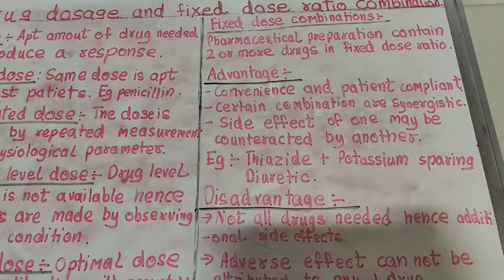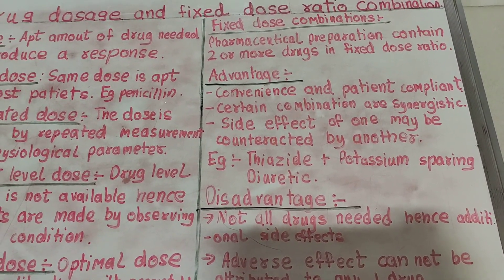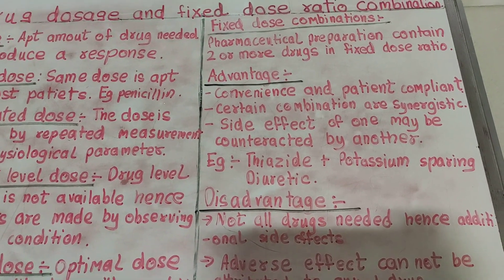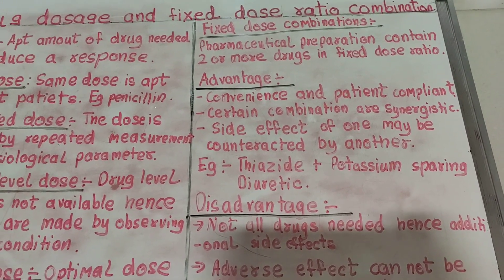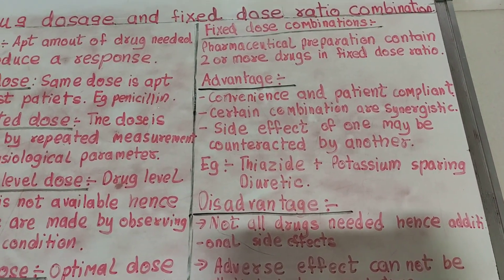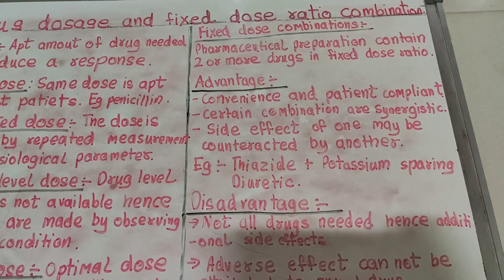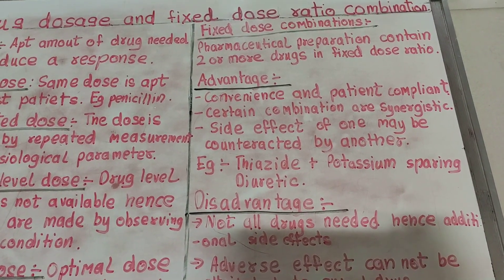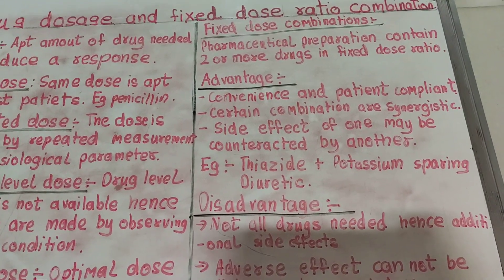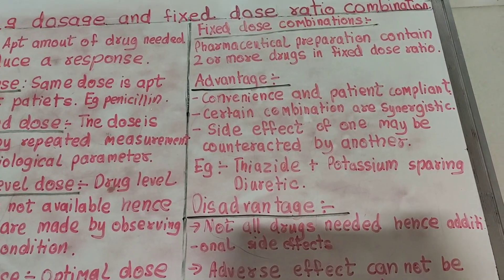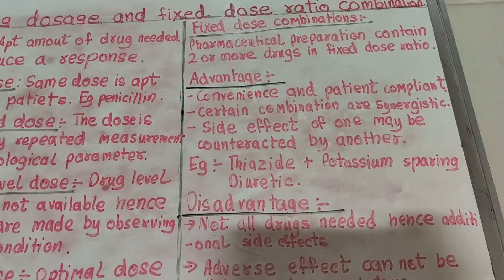Certain combinations are synergistic, meaning the activity of two drugs working together can increase and affect the patient in a good manner. Additionally, the side effect of one drug may be nullified by the second drug. A very good example of this is in diuretics — that is, thiazide and potassium-sparing diuretics combined.